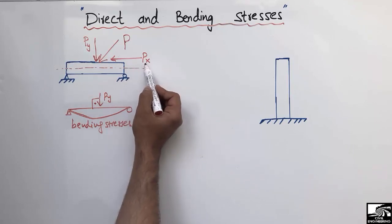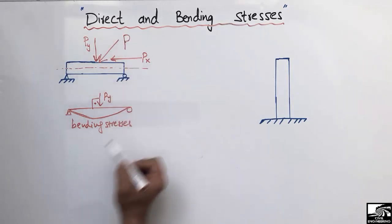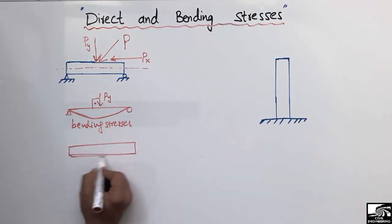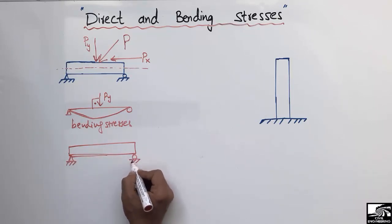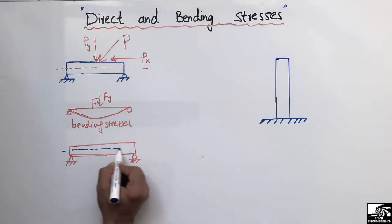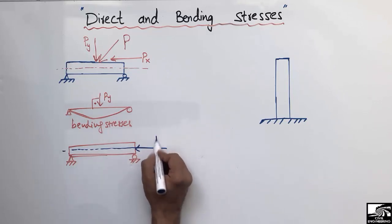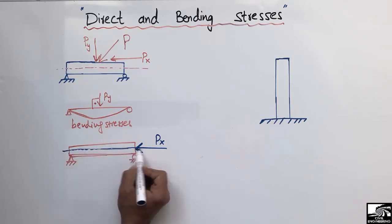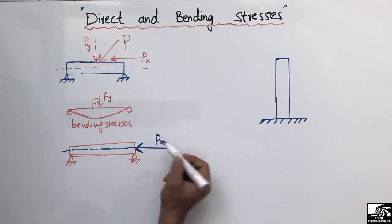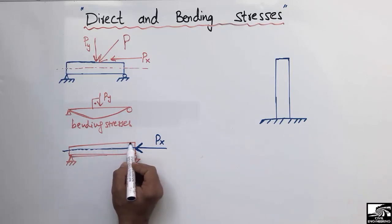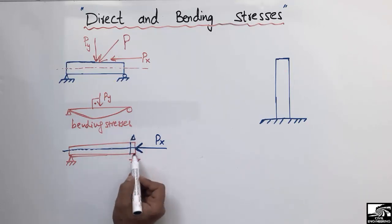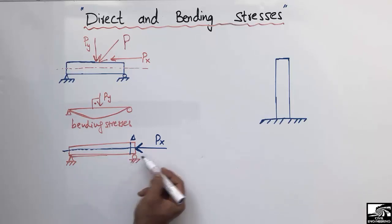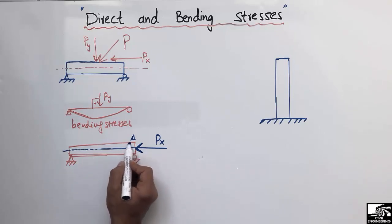Due to the horizontal component of the load, we have another type of stress called direct stresses. Due to this horizontal load component Px, we will have stress in the axial direction — along the axis of the beam. This load makes an angle of zero degrees with the axis of the beam, so we call it the axial load. This axial load causes the beam to compress by some amount delta, because a roller support cannot resist any horizontal force.